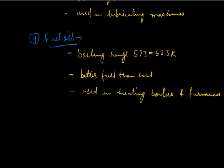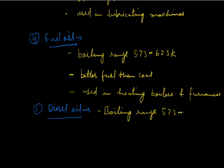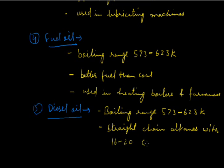The next important fraction obtained from fractional distillation is diesel oil. You all must have heard the name of this substance. Its boiling range is 573 Kelvin to 623 Kelvin. It contains straight chain alkanes with the number of carbon atoms from 16 to 20. It is mainly used as a fuel in cars, trucks, buses - such heavy vehicles.